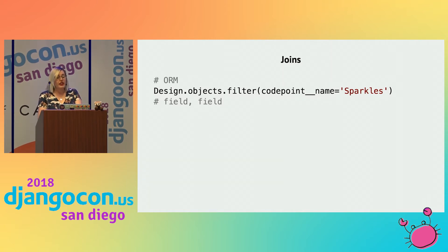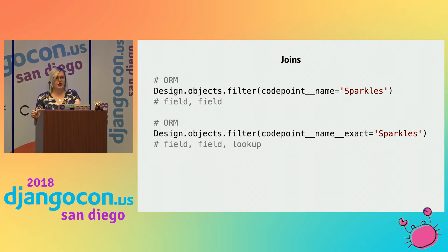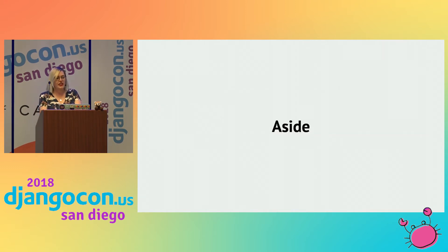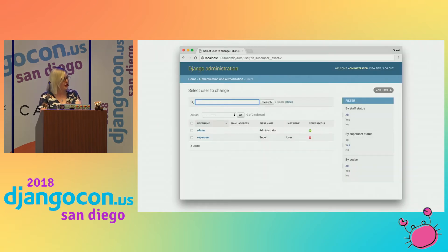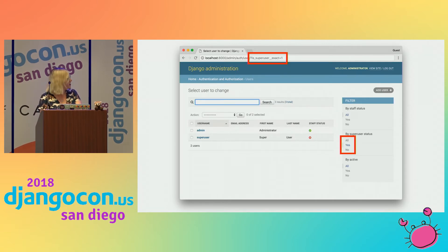By default, we need to end on a lookup. From what we saw before, we had a Design and a CodePoint, and a CodePoint had a name. So we're not ending on a lookup — Django interprets this as an exact match, so these two queries would be the same. As an aside, we've seen 'exact' before: in the very first screenshot of the Django admin screen, the filters on the right-hand side are just adding filters onto our query. That particular one is `is_superuser__exact=1`, which matches what was selected in the UI. So the admin is running ORM queries — that's pretty cool.